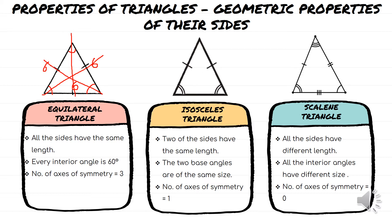The second triangle is the isosceles triangle — 2 of the sides have the same length. So if you have 7 cm here, you will also have 7 cm here. This line indicates that these 2 sides have the same length. And then the 2 base angles are of the same size — this is your base. So if you have 30 degrees here, this will also be 30 degrees. And you only have 1 axis of symmetry.